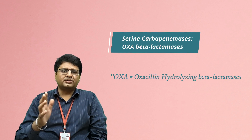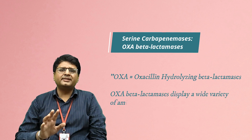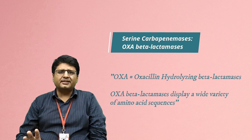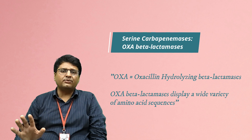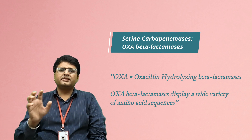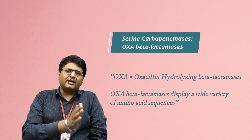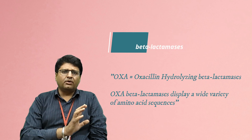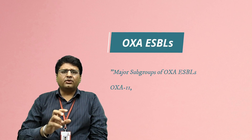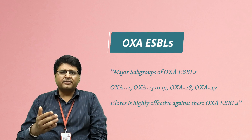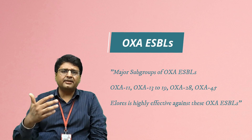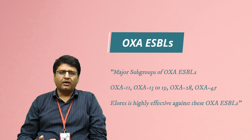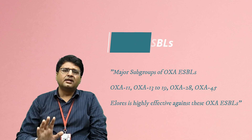OXA beta-lactamases — full name: oxacillin-hydrolyzing beta-lactamases — display a wide variety of amino acid sequences. Depending on their amino acid structure, OXA enzymes are categorized as either OXA ESBLs or OXA carbapenemases. OXA ESBLs include OXA-11, 13, 14, 15, 16, 17, 18, 19, 28, 45, etc., and LORES was found to be highly effective against these OXA ESBL enzymes.